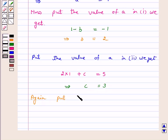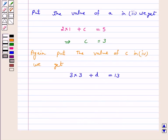Put the value of C in equation 4. We get 3 times 3 plus D equals 13, which implies 9 plus D equals 13, that is D equals 4.